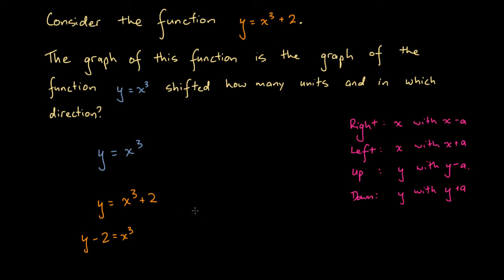We've subtracted 2, and it's fairly obvious to see that in order to get from this function to this function, we're replacing y with y minus 2. On this side we've got y and y minus 2; on this side we've got exactly the same expression, x cubed. So the graph of this function can be related to the graph of this function by replacing y with y minus 2. And replacing y with y minus a is the same as shifting a graph up by a units.